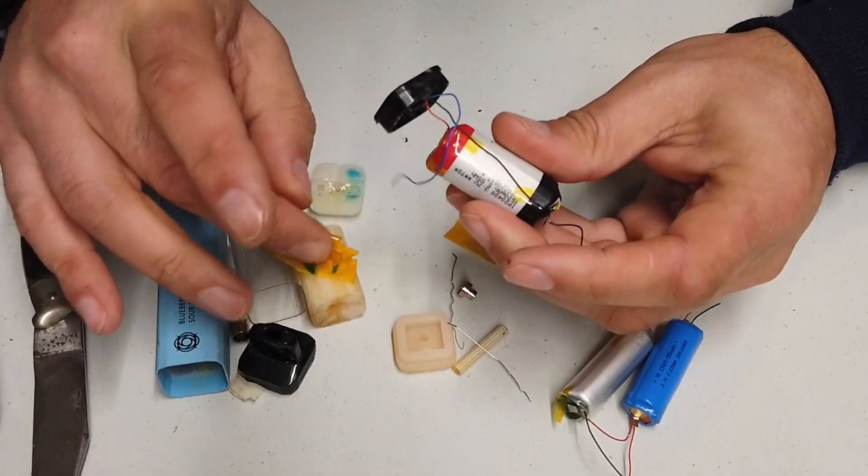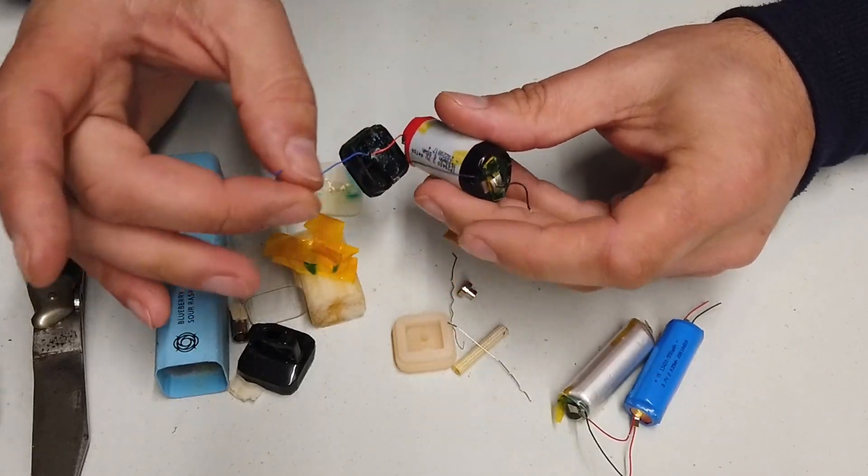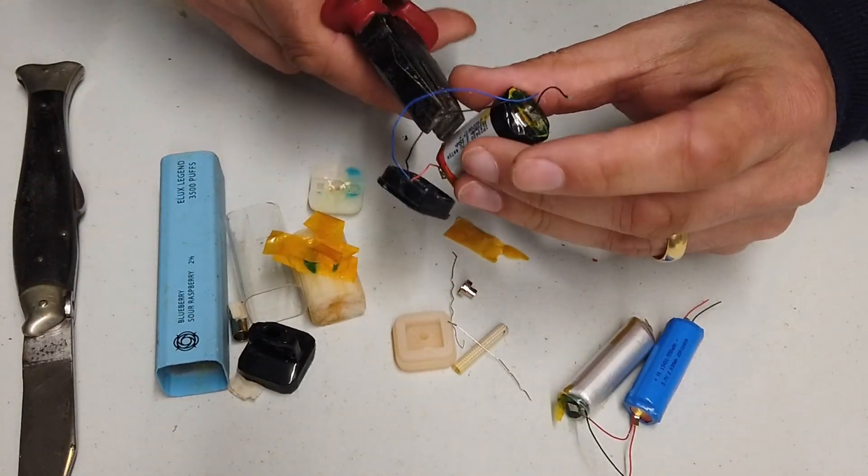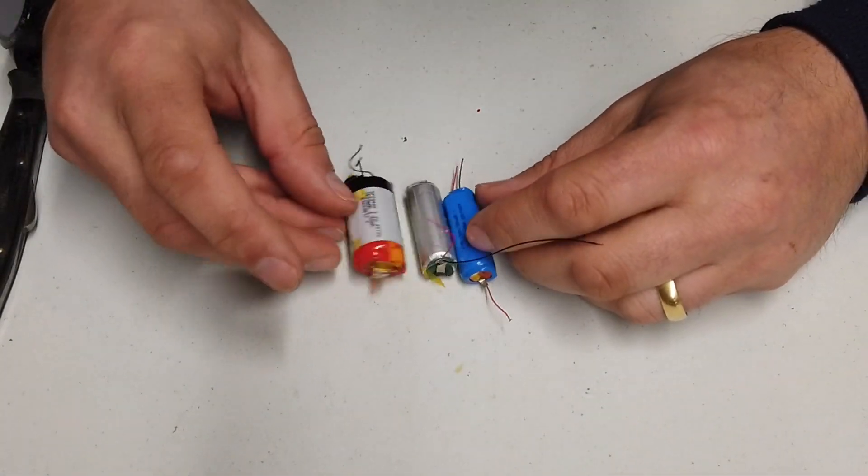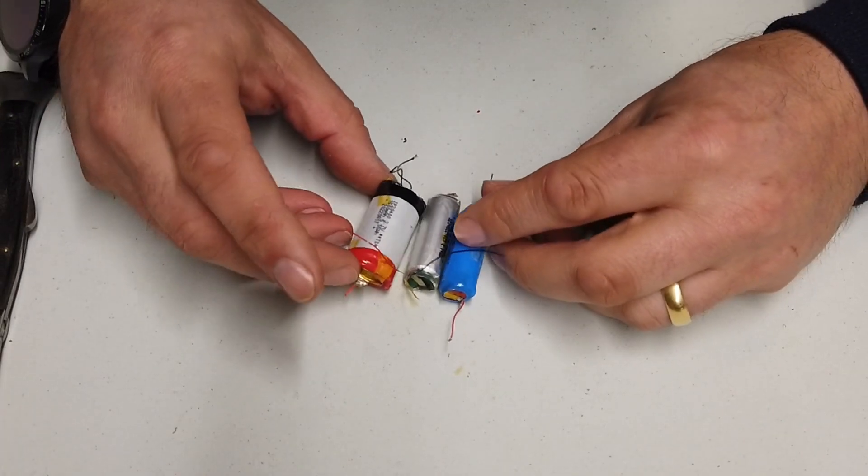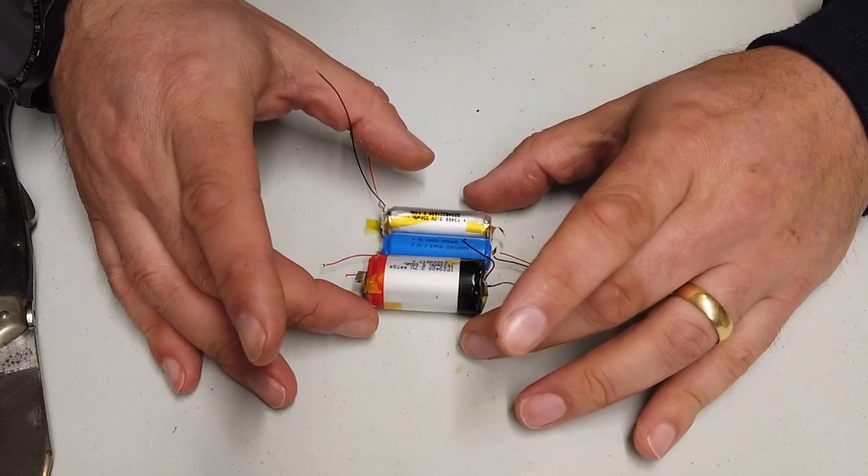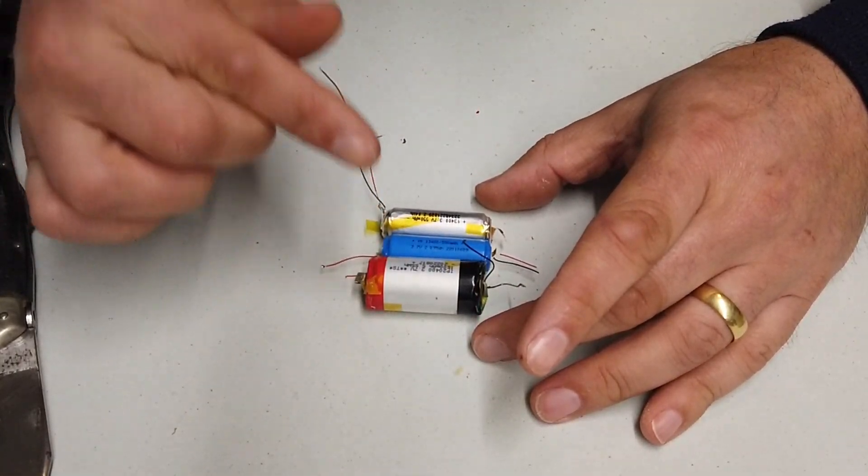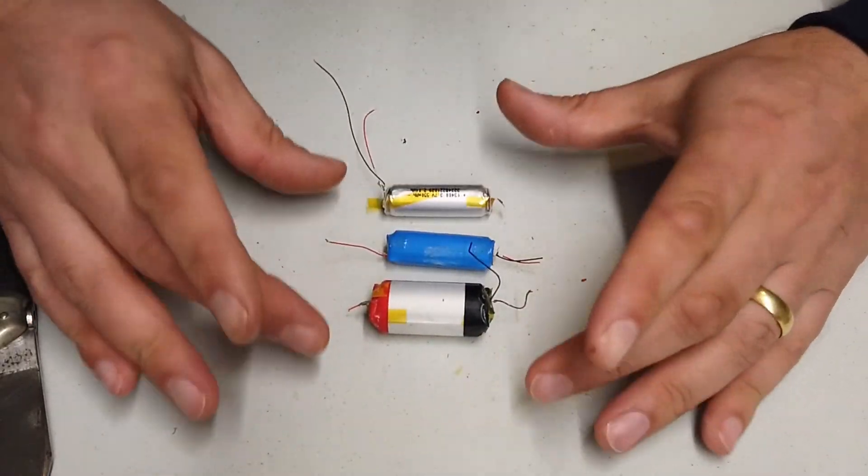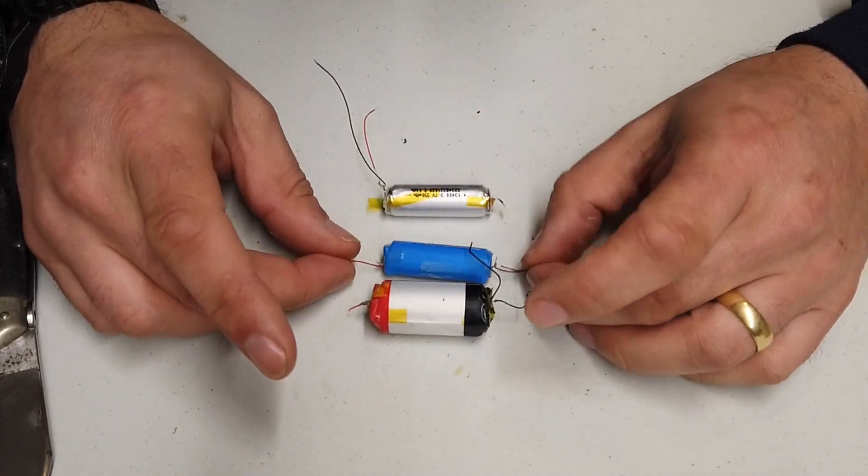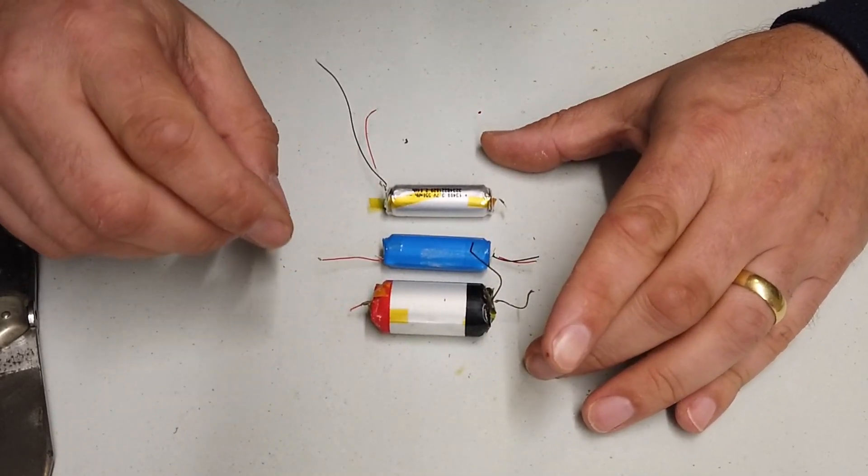But this is an absolute beast of a lithium cell. Right, let's just cut those cables. So there we have it, folks. We have got a combined total of 2600 milliamp hours worth of lithium cells there. And they've only been used once, they've been charged once and discharged once. How cool is that? Well, I'm going to keep my eye out for plenty more of these things going forwards.